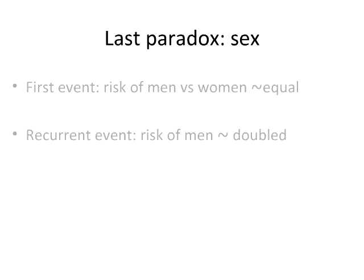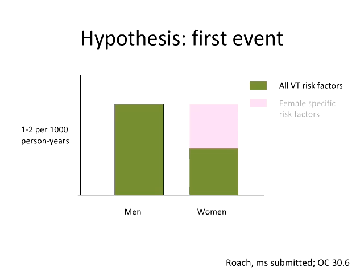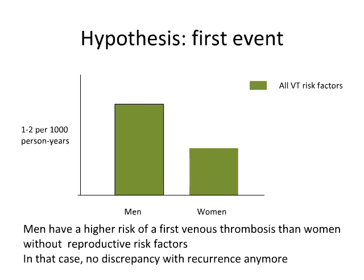Regarding the sex paradox, which goes the other way around — for a first event the risk for men and women is about equal, but for recurrent events the risk in men is about doubled. Rachel Roach has written a nice paper on this problem. Her hypothesis is that for a first event, men also have twice as high a risk compared to women, except we don't see it because women are exposed to so many extra risk factors such as pregnancy and hormone use. If we could do an analysis disregarding reproductive use of hormones and pregnancy, we could perhaps find this risk difference.